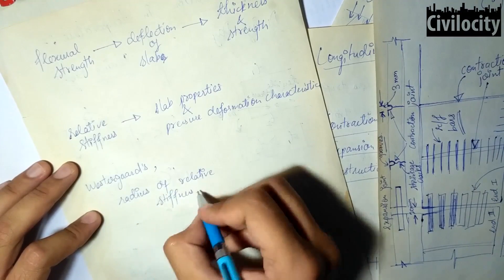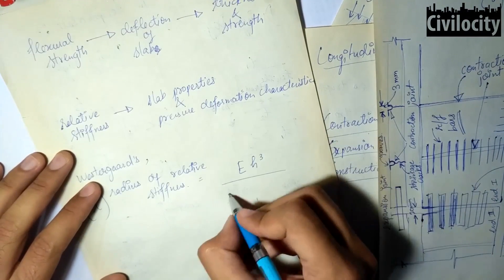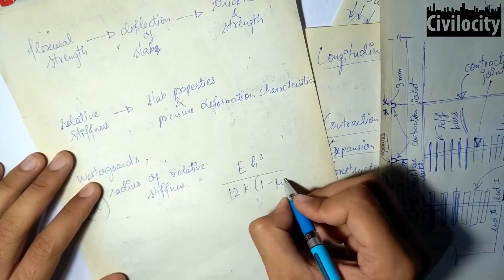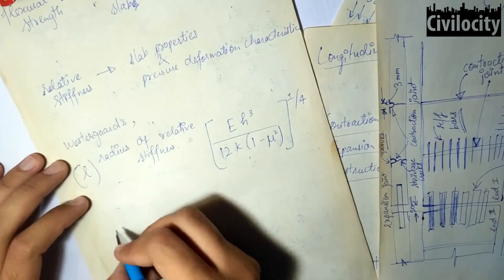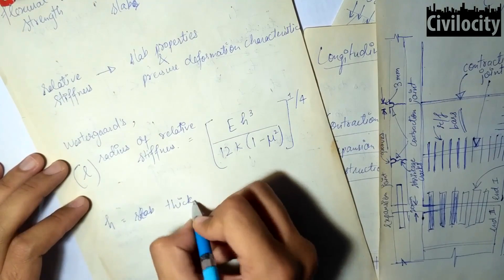Westergaard defined this term as the radius of the relative stiffness L, which is given as L equals E h cubed divided by 12k times 1 minus nu squared, raised to the power 1 by 4.